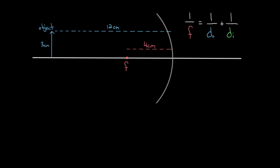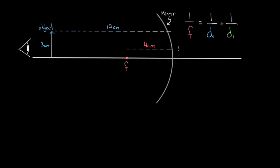Everyone has their own sign convention — there are a lot of different ones in optics. The one I'm using is the one most textbooks use today: anything on the front side of the mirror is positive. So your eye is over here looking at some object, maybe a blue crayon, held in front of the mirror. Anything on that front side — focal point, object distance — is positive. If the image distance comes out positive, it's also on the front side. Anything negative is behind the mirror.